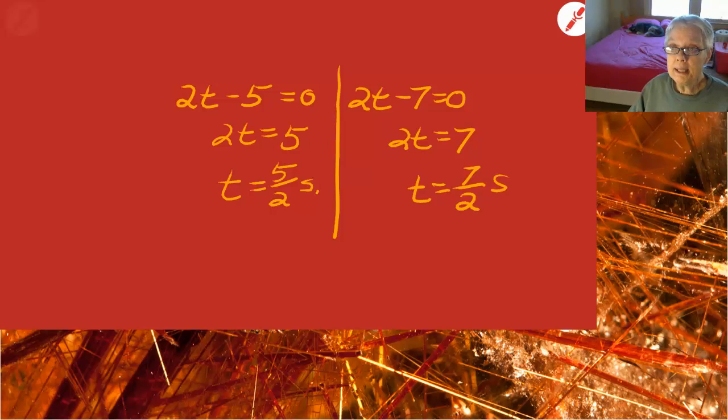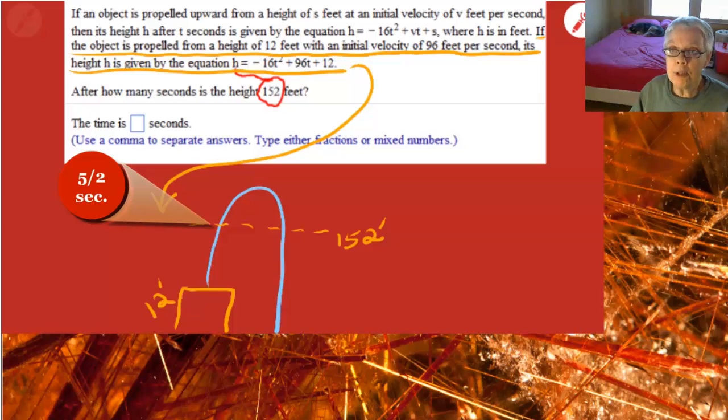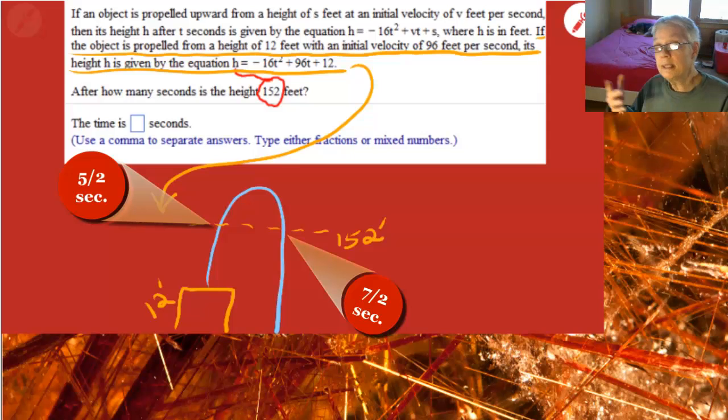Now what does this mean? That means that the first time the projectile is 152 feet above the ground is at 5 over 2 seconds or 2.5 seconds from the time it's launched. The second time the projectile is 152 feet above the ground is 7 over 2 or 3.5 seconds after it's fired off the launch pad.